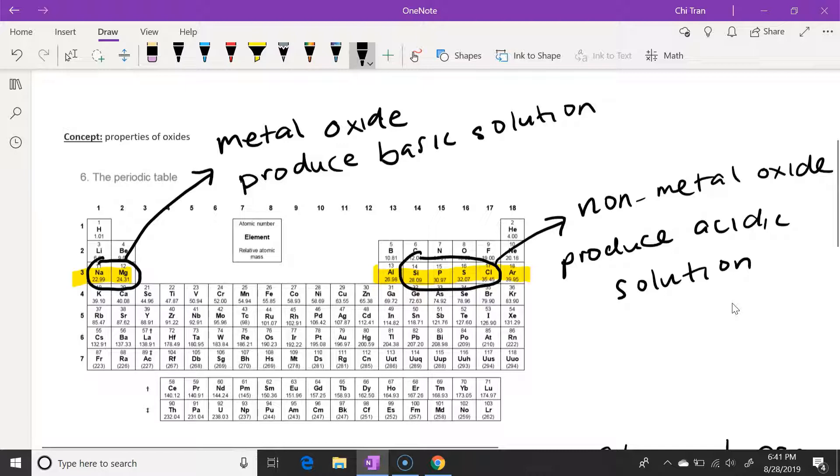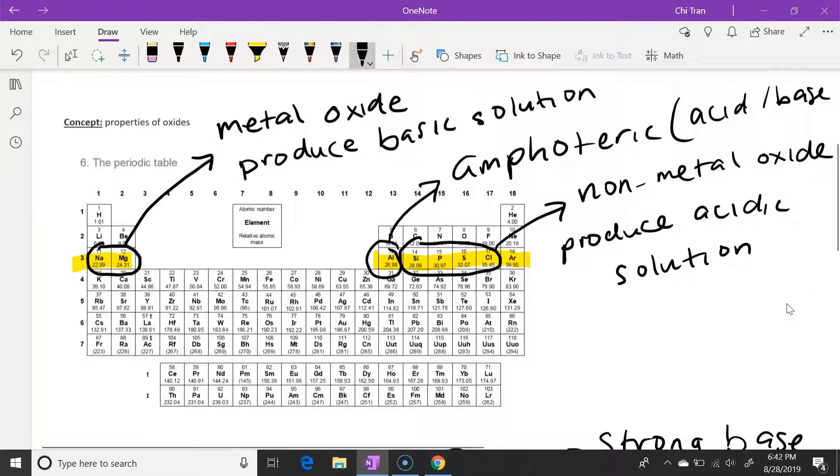So we can see the elements on the left of the periodic table, the metals, produce basic solutions, and elements on the right, the non-metals, produce acidic solutions. But aluminum, it's right in the middle, and it's an amphoteric element, which has the property to produce either basic or acidic solution.